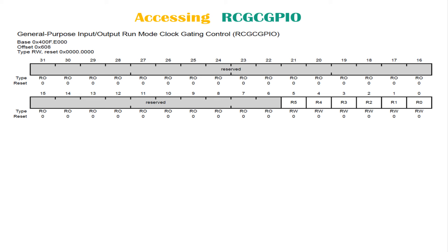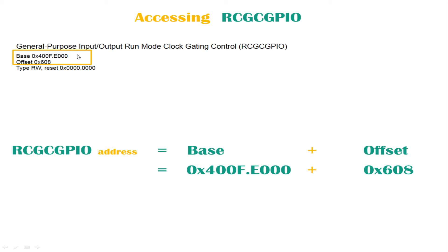Now let's look at how to access the RCGCGPIO register and give it a proper name. This is the same datasheet snapshot, but now we're interested in the base address and offset shown at the top. To get the address of the RCGCGPIO register we add the base and the offset together, and the result is a 32-bit hexadecimal number — the only way to access that register.